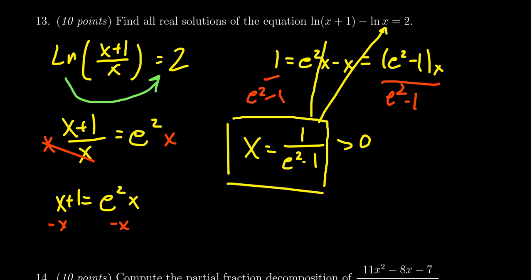But as 1 over (e squared minus 1) is positive, the natural log of that value is perfectly fine. And if you plug it in the other term, you take a positive plus 1, that's still positive. We're within the domain of the problem. So we can be rest assured that the correct answer is 1 over (e squared minus 1). Don't bother approximating this. The exact value is expected.